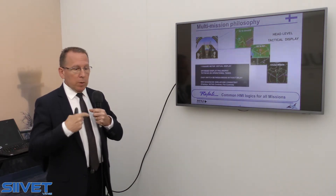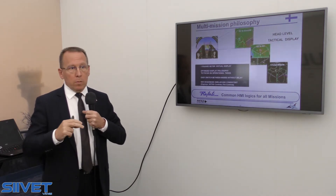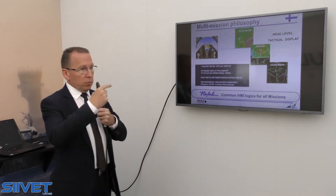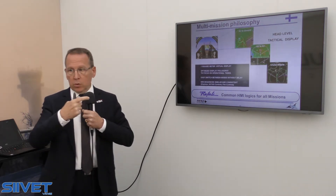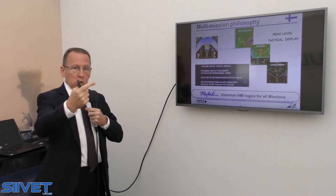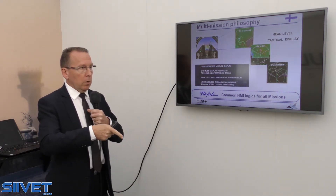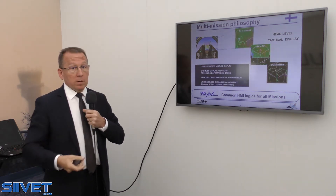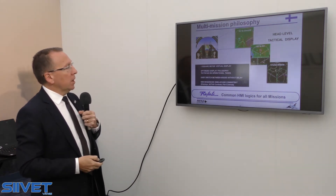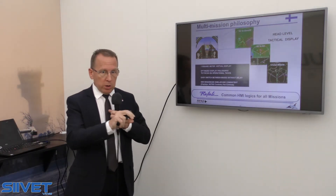It is a collimated display which provides the pilot with a one square meter color display. You don't have to adapt your eyes to a close or short range, because when you look into the head level display or look up outside, it's the same. A common logic as well, because the aircraft is working on all missions at the same time.